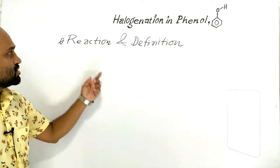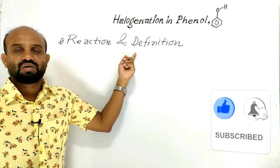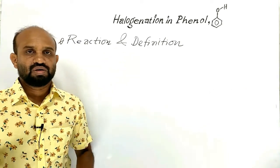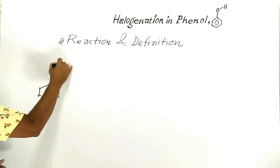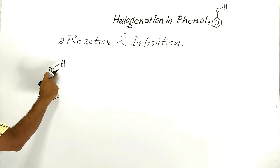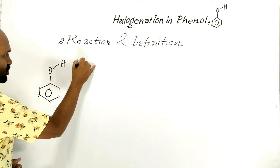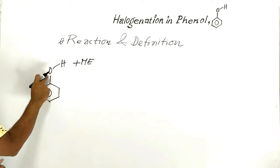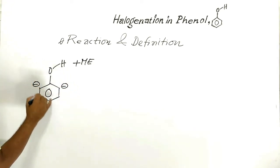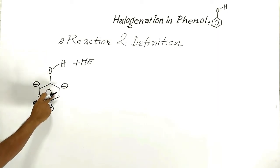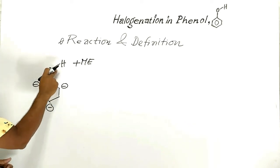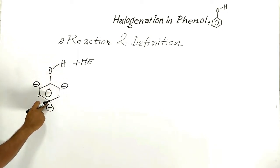Firstly, halogenation reaction of phenol and definition of halogenation. This is phenol. The hydroxyl group is a kind of electron-donating group here. Through positive mesomeric effect, it increases electron density at ortho positions and at the para position. So, the hydroxyl group is a benzene ring activating group, and it is an ortho-para-directing group towards electrophiles.